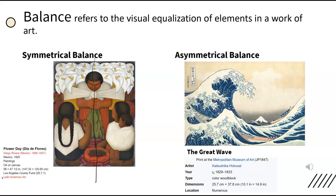Hokusai's print The Great Wave on the right uses asymmetrical balance. The two sides of the composition are significantly different, but they remain visually equal. The smaller shapes of the mountain and the boats balance out the large wave on the other side of the painting. An asymmetrical composition like this can have a great deal of movement while still being pleasing to the eye. Asymmetrical balance is often something you just feel. If you've ever worked on a drawing or painting that didn't seem quite right and you couldn't figure out why, a lack of balance may have been to blame.